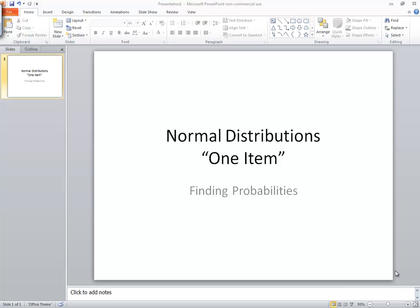Let's take a look at normal distributions, finding probabilities and specifically looking at one item. An example might say find the probability that the average age of one person is greater than 50. So we're talking about one individual, one person, one book, whatever it might be.